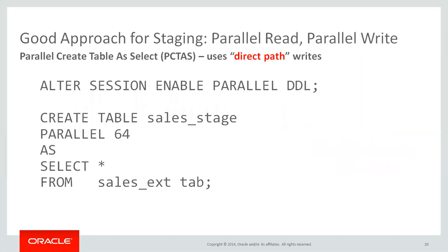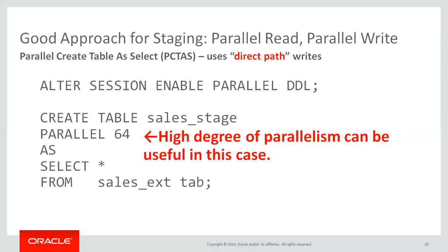For staging inside the database, the technique is: create table, my internal staging table, as select in parallel from my external data. This is a parallel read and a parallel write — it uses a direct path load, which we'll talk about in a minute. It's pretty much the fastest way of getting data into a database, hands down, extremely quick. Parallelism in this case is likely to help, though it is very system-dependent — it depends on how many CPU cores you have, how powerful your disk is, and those sorts of system architecture factors.